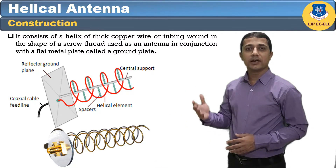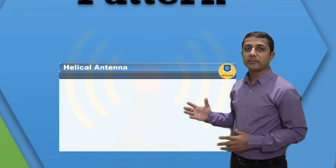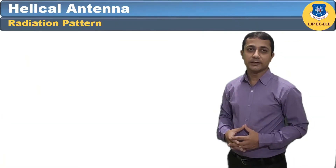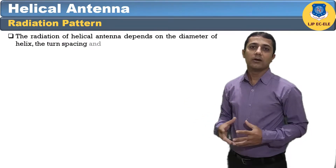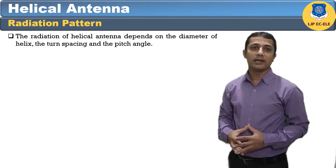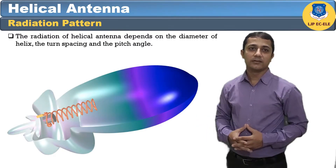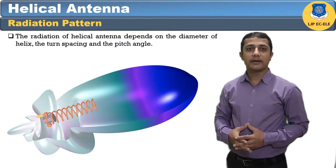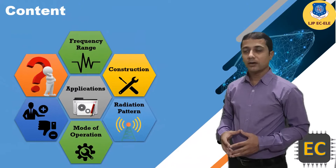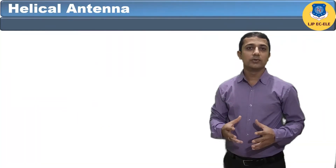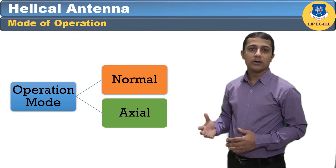Here the image of the helix antenna detailing the antenna parts is shown. The radiation of the helical antenna depends on the diameter of the helix, the turn spacing, and the pitch angle. Here the radiation pattern showing the directivity of the helical antenna is shown.